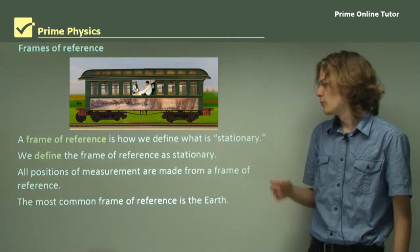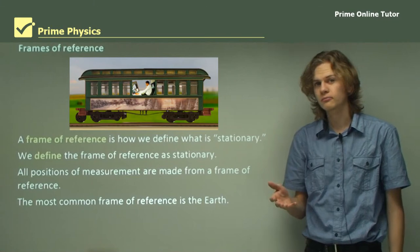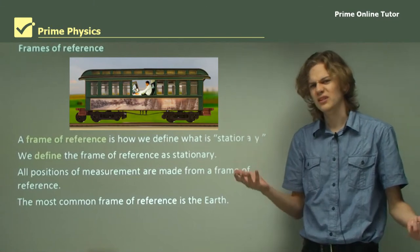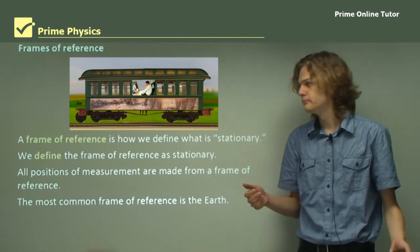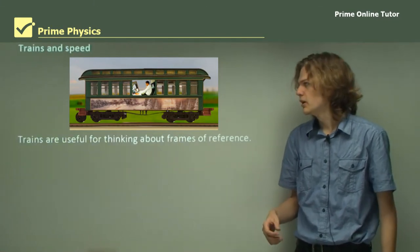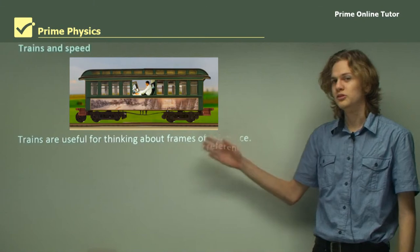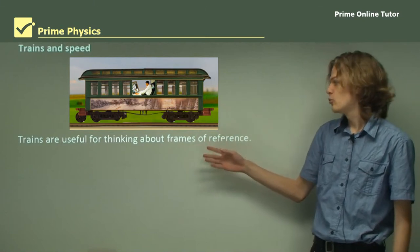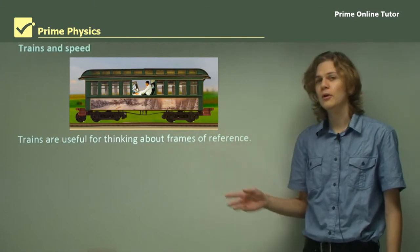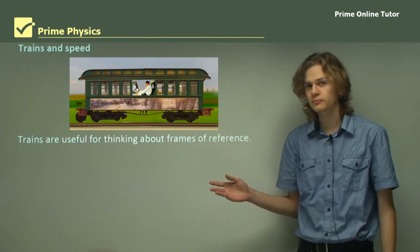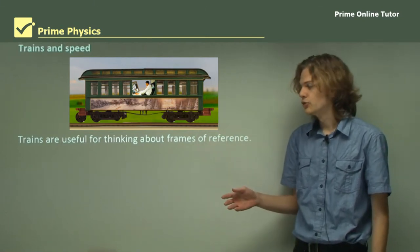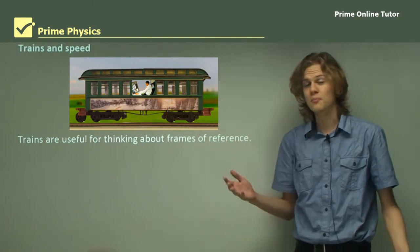The most common frame of reference is the earth, which is pretty reasonable. Now trains, as we can see one here, are quite useful for thinking about frames of reference. So let's take a look at a train in motion.